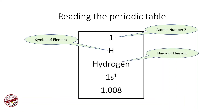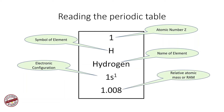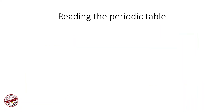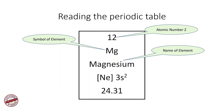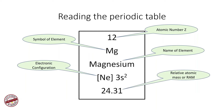The symbol of the element is written second, followed by the name — in this case, hydrogen. Next is the electronic configuration based on the quantum mechanical model of the atom. The number at the bottom, 1.008, is called the relative atomic mass or RAM. This is not a whole number; it is a fractional value. Let's take another example: magnesium has atomic number Z = 12, symbol Mg, and electronic configuration neon followed by 3s², with a relative atomic mass of 24.31.